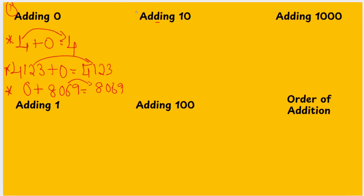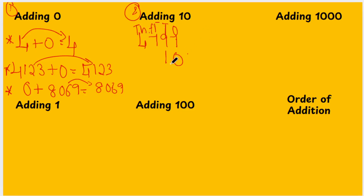Let's move on to adding 10. This is the second fact. If you add 10 with a number, for example 4,797 plus 10 — I will write it like this. Because 0 is in the place of 1s and 1 is in the place of 10s. So I am going to add in the 1s and 10s place only. The answer: 7 plus 0 is 7, 9 plus 1 is 10, 7 plus 1 is 8. You are just adding 10 with the number.